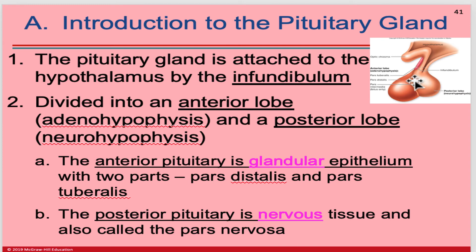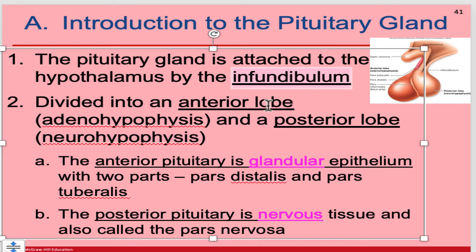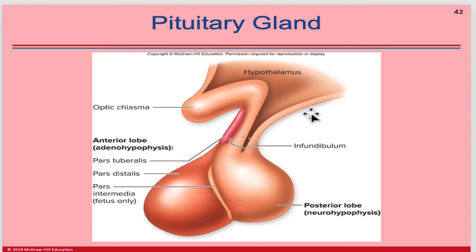In physiology, whenever a structure hangs below another through a stalk, that structure is called an infundibulum. The interior mass of the pituitary is known as the adeno-hypophysis and the posterior lobe is known as the neuro-hypophysis, which tells us the posterior lobe is an extension of the neurons from the hypothalamus. The anterior pituitary is glandular epithelial with two parts — the pars distalis and the pars tuberalis — whilst the entire posterior pituitary is the pars nervosa. Note that the pars intermedia is only present in the fetus and then disappears.